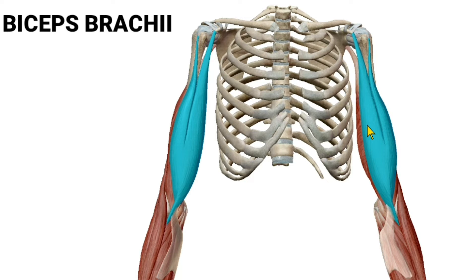Now we'll talk about biceps brachii muscle — the right and left biceps brachii muscle. This muscle is one of the anterior compartment muscles of the arm.